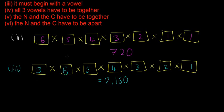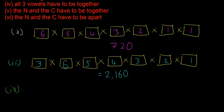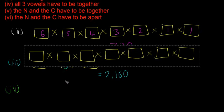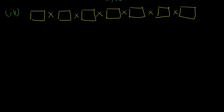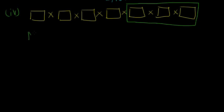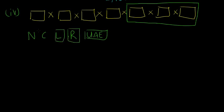Part four: all three vowels have to be together. This one is a little more complicated. There are seven different spaces, but we know all three vowels must be together. So we draw a big box around three of the positions and treat those three vowels as one unit. For example, we could have N, C, L, R, and then U, A, E all in one block.